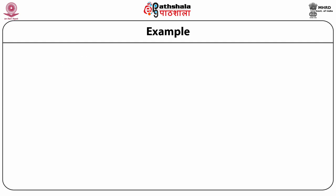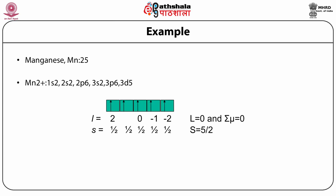Let us take an example of manganese. Manganese has 25 electrons, so Mn²⁺ will have the configuration 1s², 2s², 2p⁶, 3s², 3p⁶, 3d⁵. Hence we have 5 valence electrons with different combinations of l as 2, 1, 0, minus 1, and minus 2. All of them have spin equal to half. Hence the total orbital angular momentum L equals 0 and the spin angular momentum S equals 5/2. Hence the summation of the magnetic moments is equal to 0.